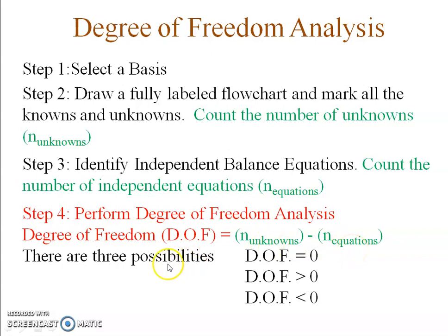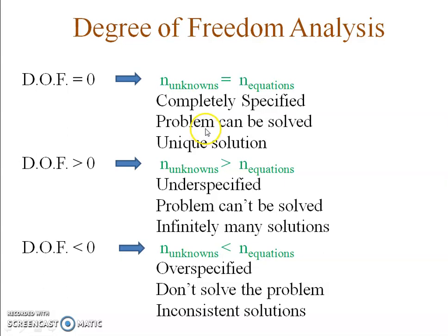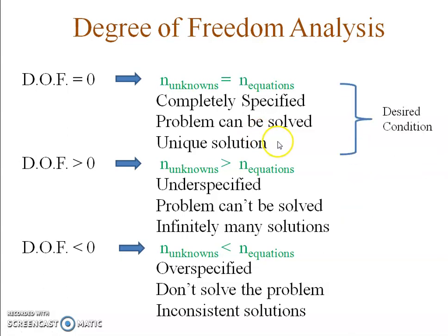There are three possibilities: the degree of freedom can be equal to zero, greater than zero, or less than zero. When degree of freedom equals zero, the number of unknowns minus number of equations equals zero — your problem is completely specified and you get a unique solution. This is the desired condition.